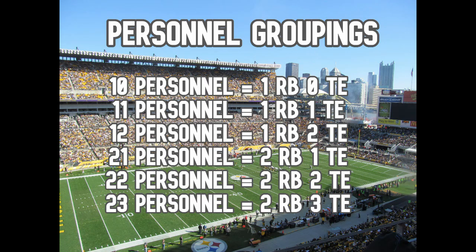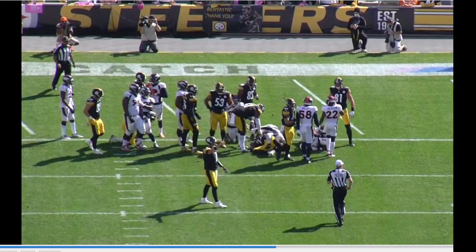That'll do it for today's video. I'll post a picture of the most common personnel groupings. Remember: the first number tells you how many running backs and fullbacks are on the field, the second number tells you how many tight ends are on the field, and you can figure out the receivers from those two numbers. That is the basic foundation of personnel groupings — a great primer for understanding football and becoming a smarter fan. Let me know in the comments what we should cover next in our Football 101 series. Please like the video and subscribe to the channel. Thanks for watching, and we'll talk to you soon.